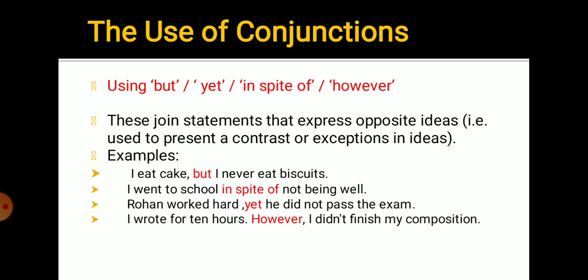Now using but, however, yet, and in spite of - these join statements that express opposite ideas. They're used to present a contrast or exceptions in ideas. We use and when two ideas are similar. But, yet, in spite of, or however are used when the two sentences or ideas are opposite. Like: I eat cake but I never eat biscuits. The first sentence is positive, the second is negative, so we use but.